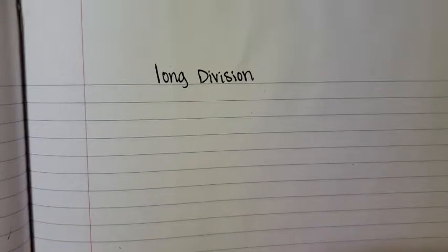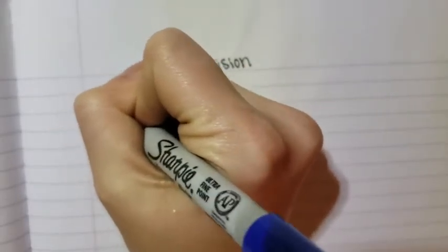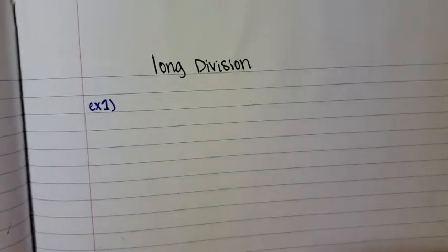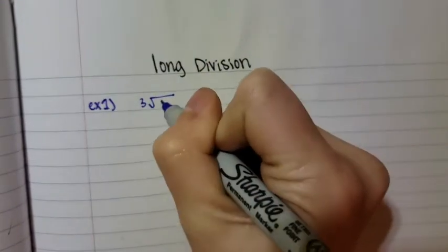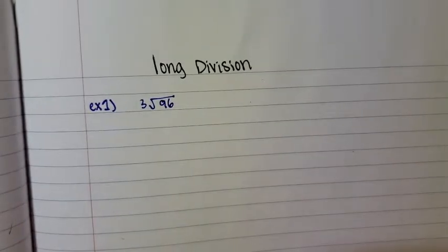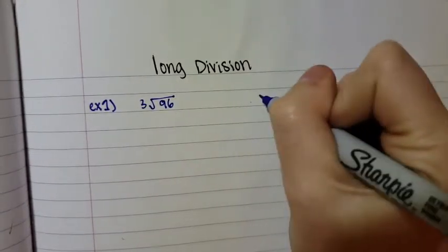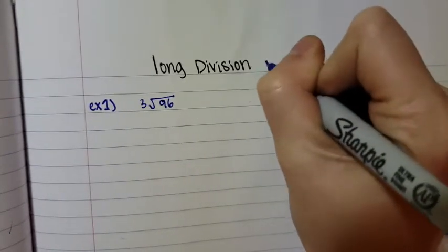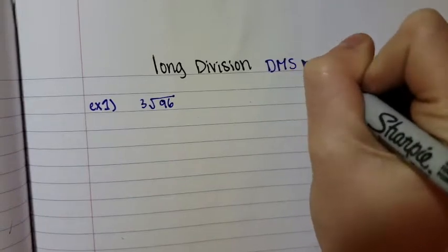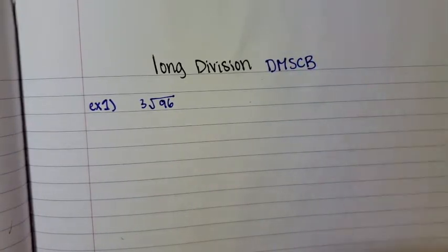I'm going to walk through the steps with you guys while explaining it. So the first example that we are going to do is 96 divided by 3. You're going to write this in standard notation for division, which would be like this. I'm also going to talk to you about what long division is.